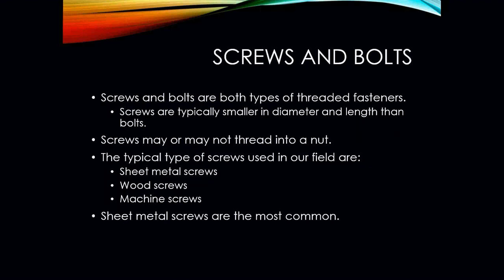The first one is obviously our screws and bolts. Screws and bolts are both types of threaded fasteners. Screws are typically smaller in diameter and length than bolts. Screws may or may not thread into a nut. The typical types of screws you're going to see in the field are your sheet metal screws, wood screws, and machine screws.